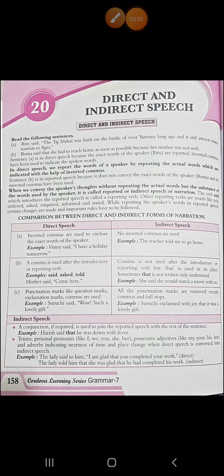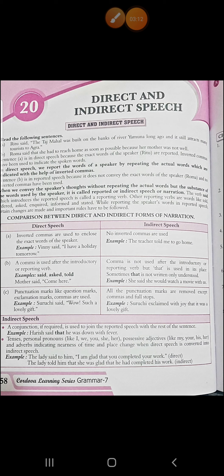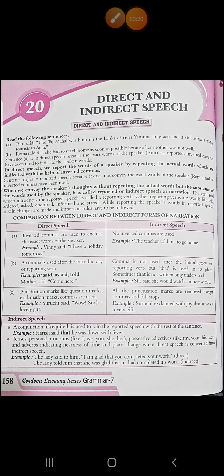Then, punctuation marks like question marks, exclamation marks, and commas are used in direct speech. For example, 'Suruji said, wow, such a lovely gift!' In indirect speech, all punctuation marks are removed except commas and full stops. For example, 'Suruji exclaimed with joy that it was a lovely gift.' In direct speech we use the exclamatory mark, but in indirect speech we use the word 'exclaimed,' and only full stops and commas are used.